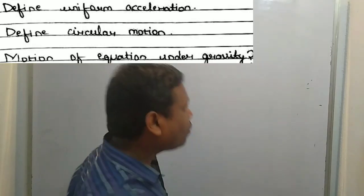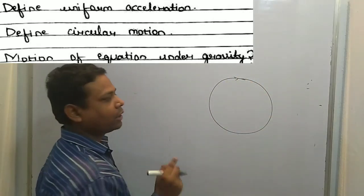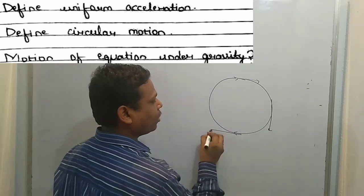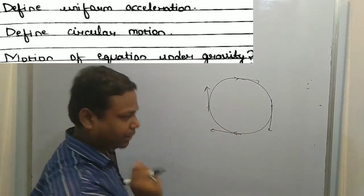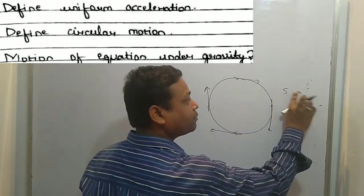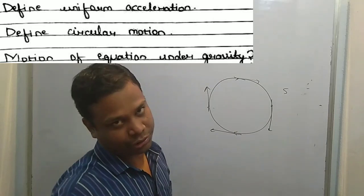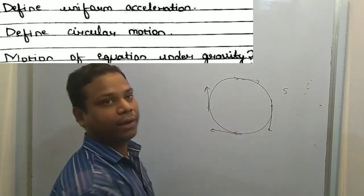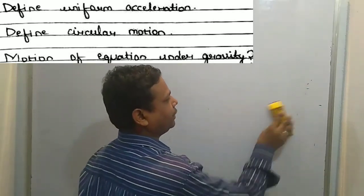Next: circular motion. If an object moves in a circular path, its direction changes at every point, so its velocity also changes at every point. But its speed remains constant, because speed is a scalar quantity while velocity is a vector quantity. So in uniform circular motion, speed remains the same but velocity changes at every point.